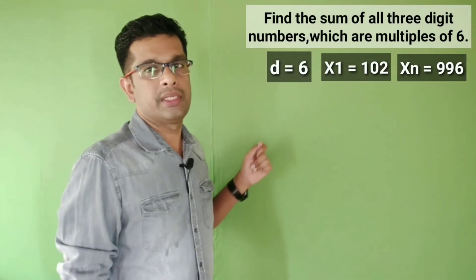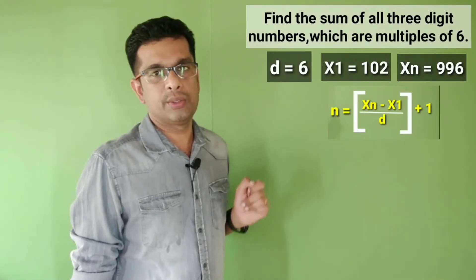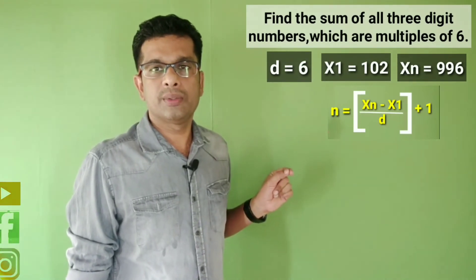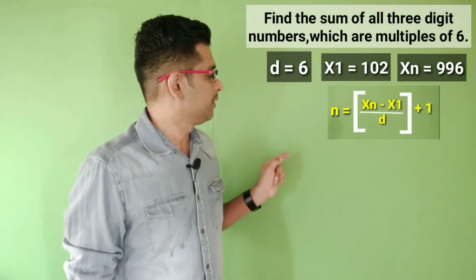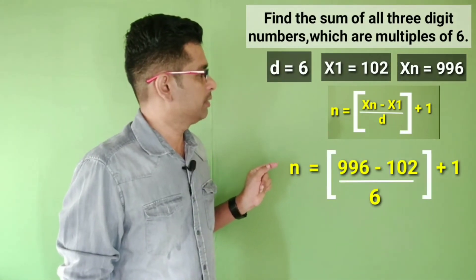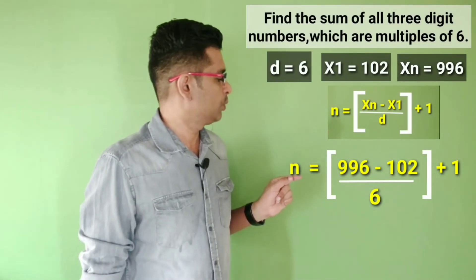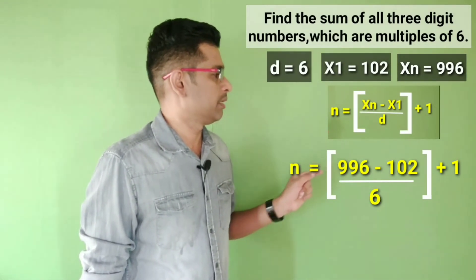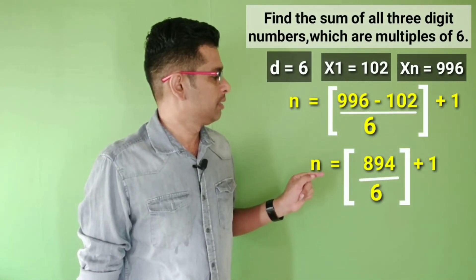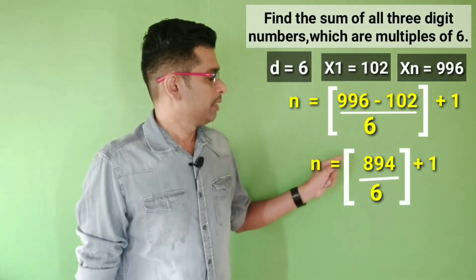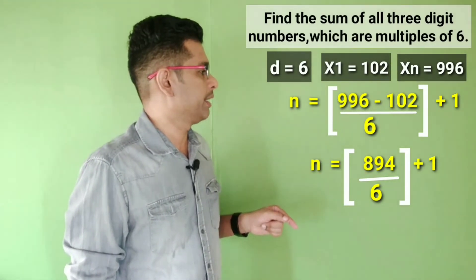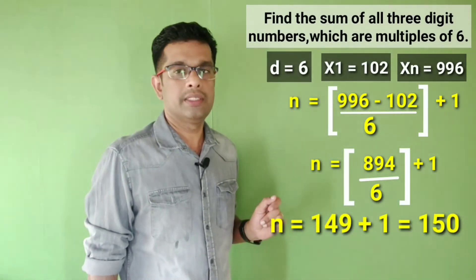The number of terms n equals xn minus x1 divided by d, plus 1. This gives us 996 minus 102 divided by 6, plus 1. That is 894 divided by 6, plus 1, which equals 149 plus 1, equal to 150. So n equals 150.